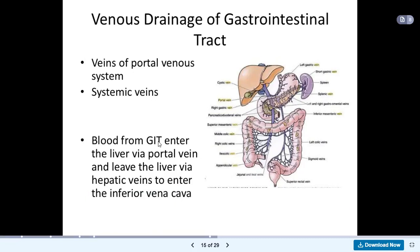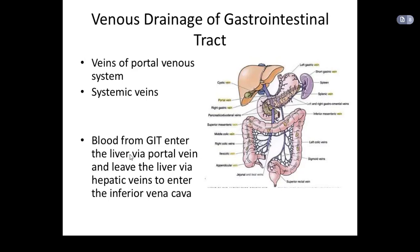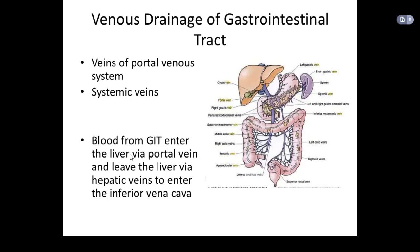Blood from the gastrointestinal tract enters the liver. Remember the liver receives a double blood supply — one from the hepatic artery and a second from the portal vein or the hepatic portal vein. Blood from the gastrointestinal tract enters the liver via the portal vein. So blood coming from the stomach and the intestines enters the portal vein, which carries it to the liver.